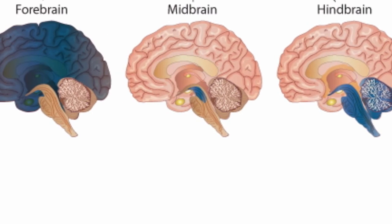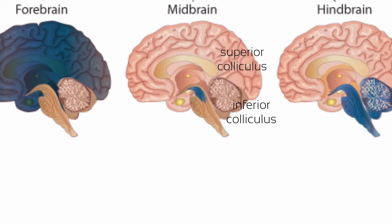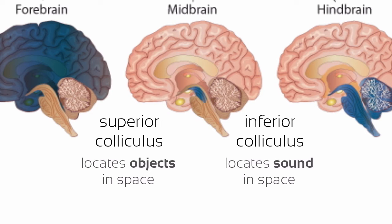Now we have the midbrain. Because it's less specialized and plays a less important role in the human brain relative to other animals, I'll only bring up two structures: the superior colliculus and the inferior colliculus. Superior and inferior refer to anatomical locations, where superior is physically above the inferior. The superior colliculus allows us to locate an object in space, while the inferior colliculus controls our ability to localize sound.